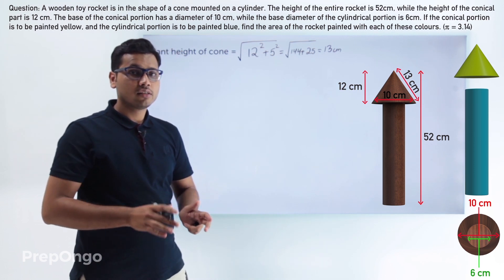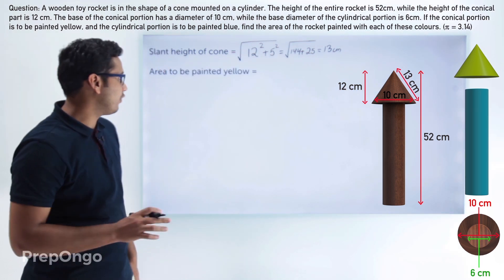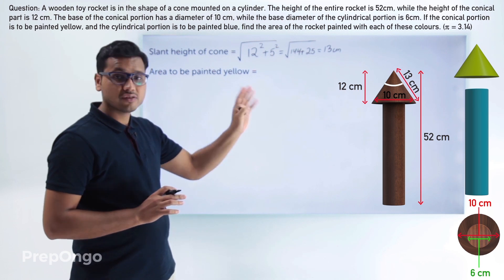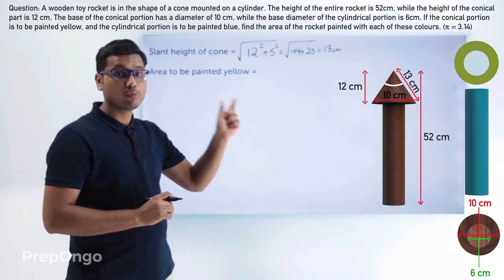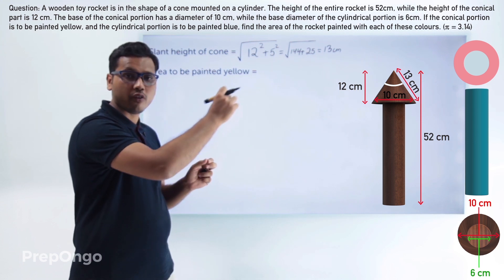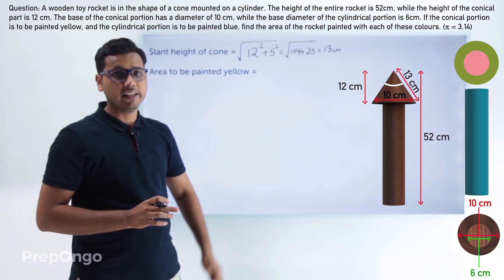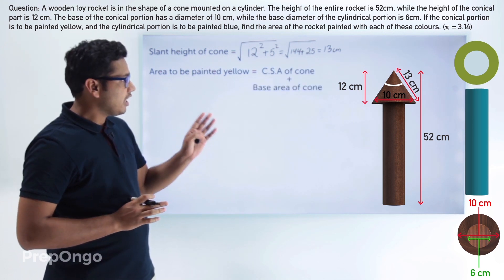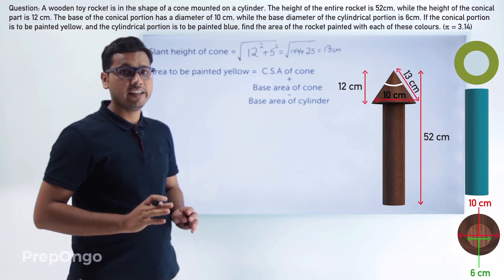Now we can find out the area which we have to paint yellow. The total area to paint yellow equals the curved surface area of the cone. If we rotate the cone, we find a ring at the base that also needs to be painted yellow. This ring area is found by taking the area of the base of the cone and subtracting the area of the base of the cylinder. So yellow area = curved surface area of cone + area of base of cone − area of base of cylinder.